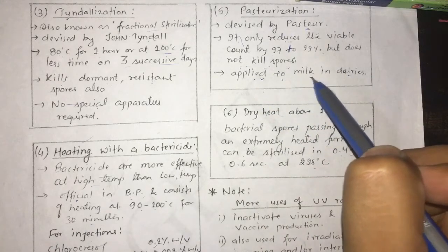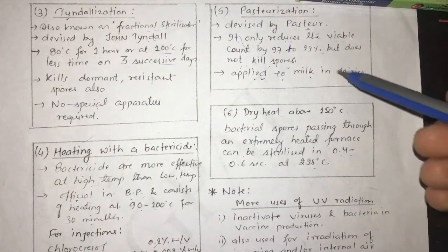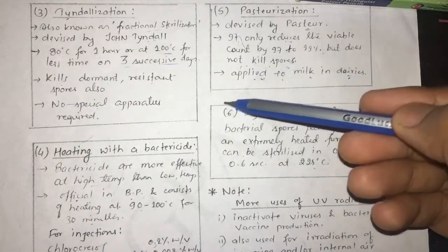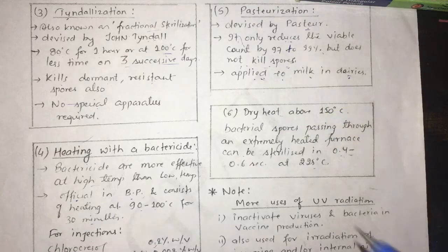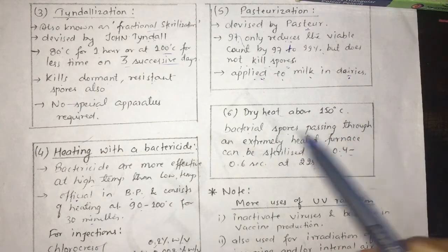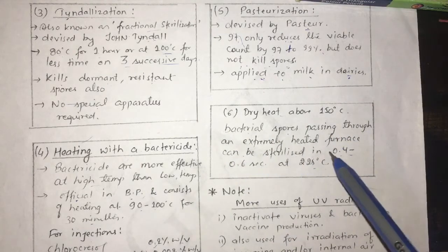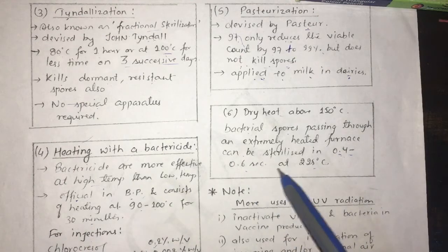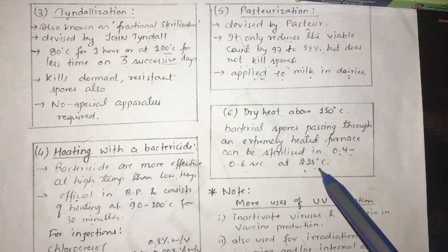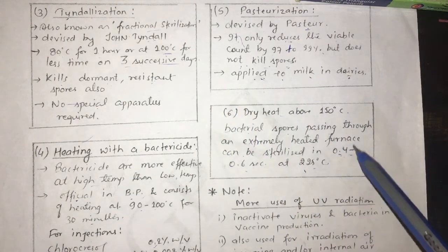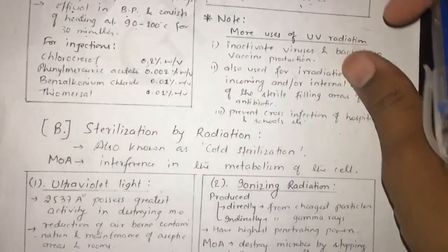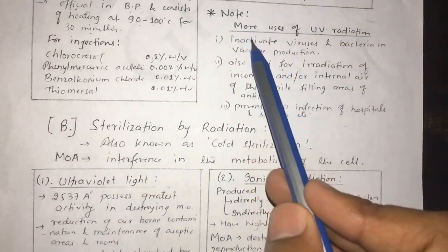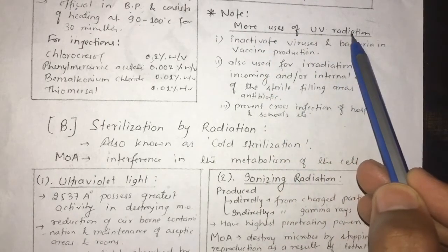Dry heat above 150°C: bacterial spores passing through an extreme heating furnace can be sterilized in 0.4 to 0.6 seconds at 225°C. This method requires only 0.4 to 0.6 seconds to sterilize any product. Ultraviolet radiation can also inactivate viruses and bacteria in vaccines and is used for radiation of incoming and internal air.